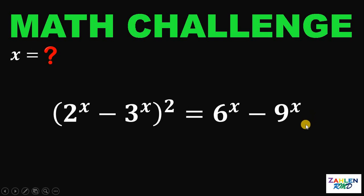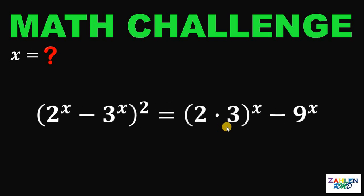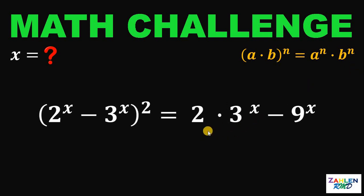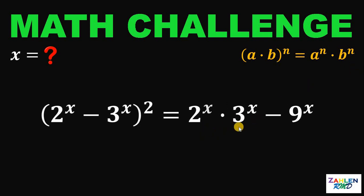Now, notice that 6 can be written as 2 times 3. At this point, let's use some laws of exponents. If we have a times b raised to n, it is equivalent to a raised to n times b raised to n. Therefore, this expression can be written as 2 raised to x times 3 raised to x.